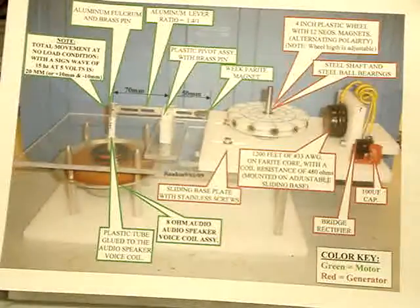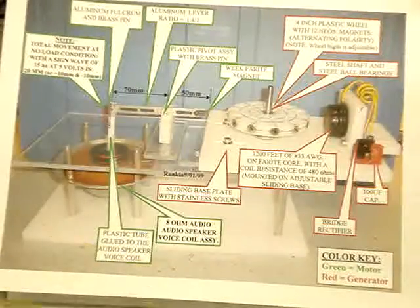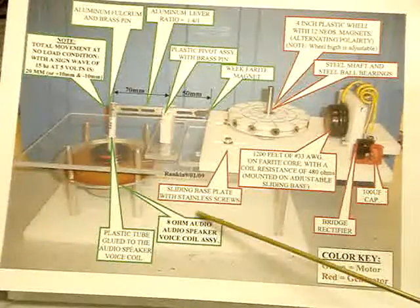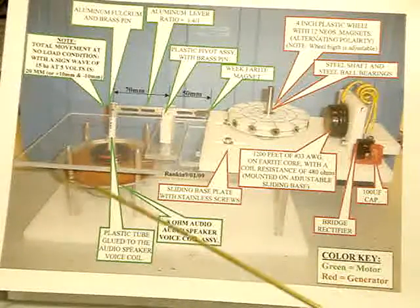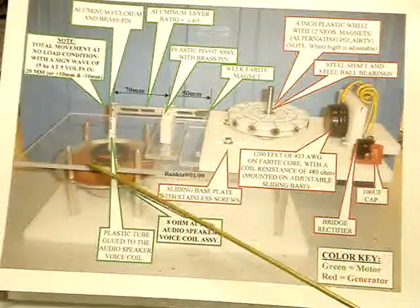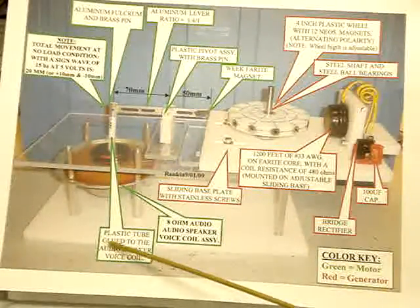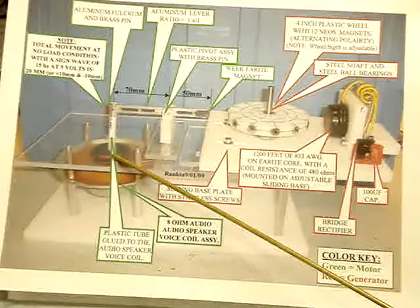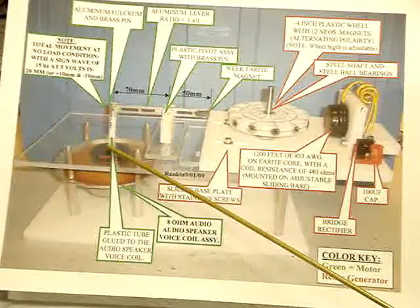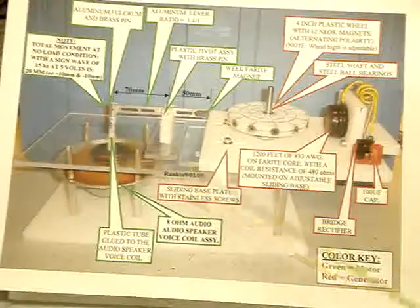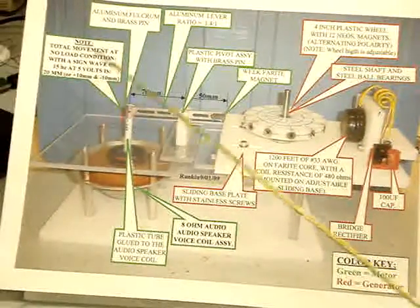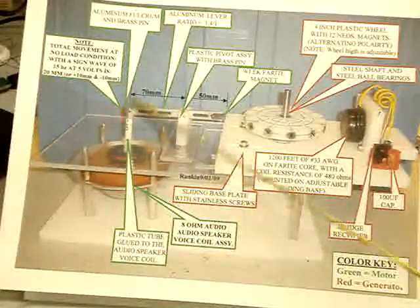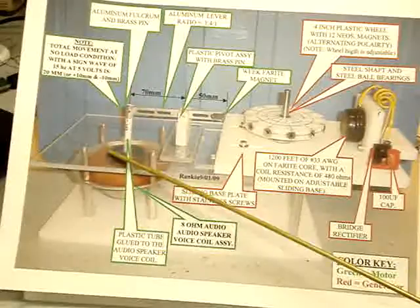That being said, this was my model that I built to do a little testing on that theory. I used an 8-ohm audio speaker to give me my vertical movement. I used a plastic tube glued to the cone or the voice coil of the speaker to give me my up and down movement. I have a 20mm movement, which is plus 10mm and minus 10mm.